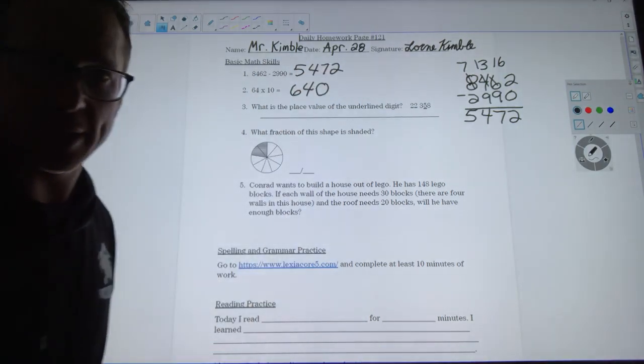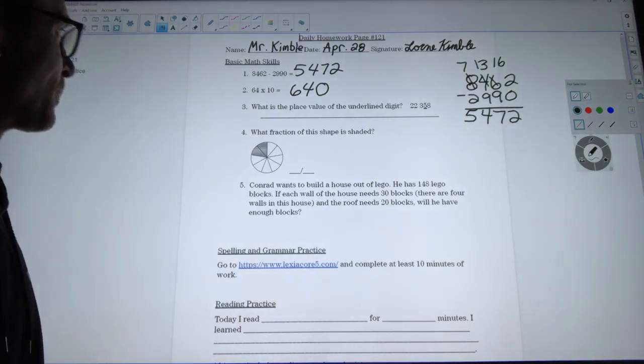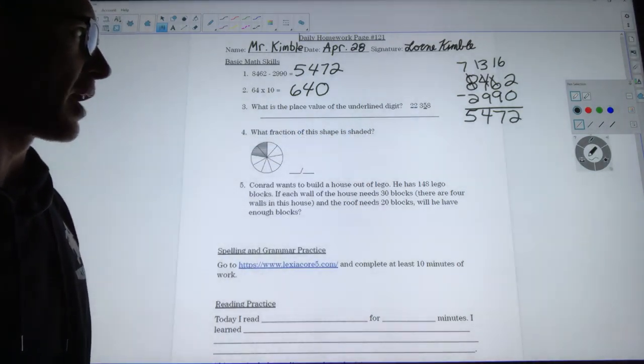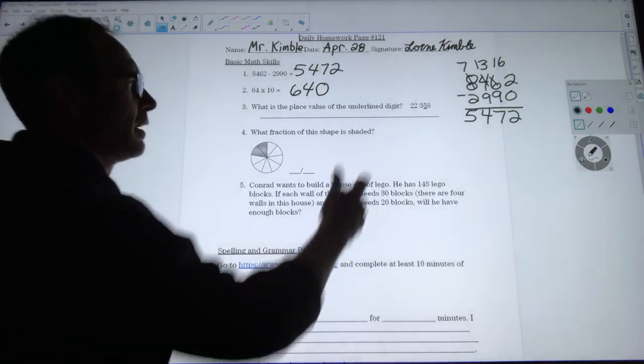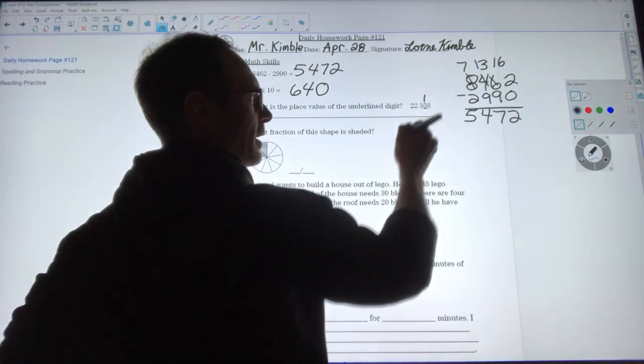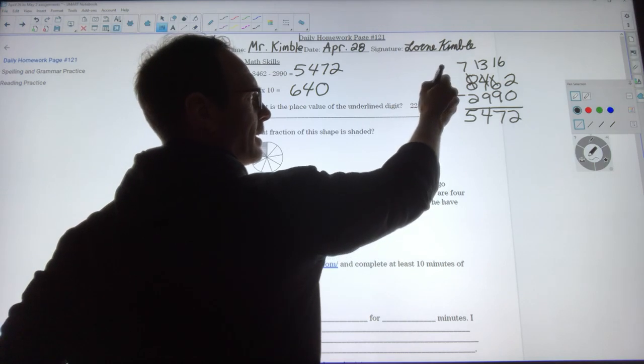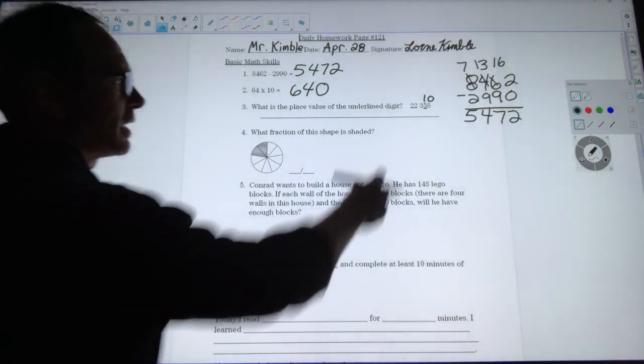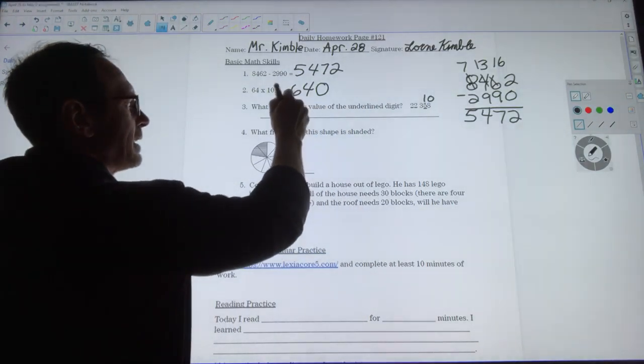I want to know the place value of the 5 in 22,358. Well, the 5, if I put a 1 above it and a zero above all the numbers to the right, you'll see that that is a 10. That must mean this is in the tens place.